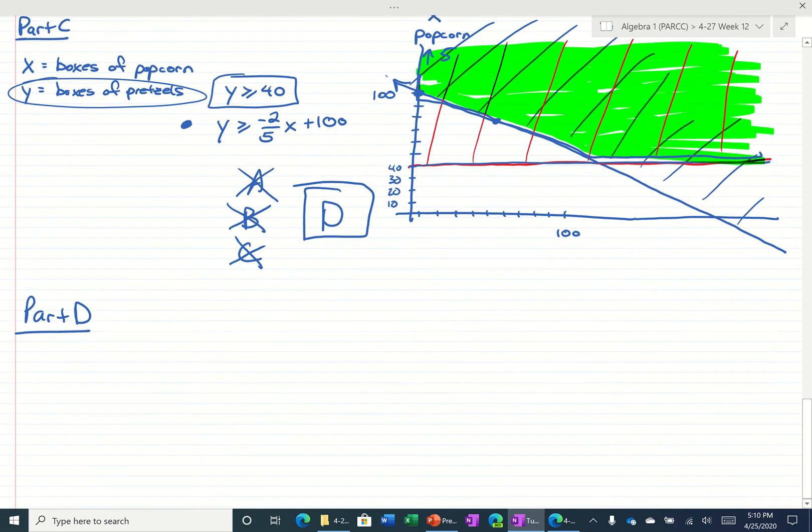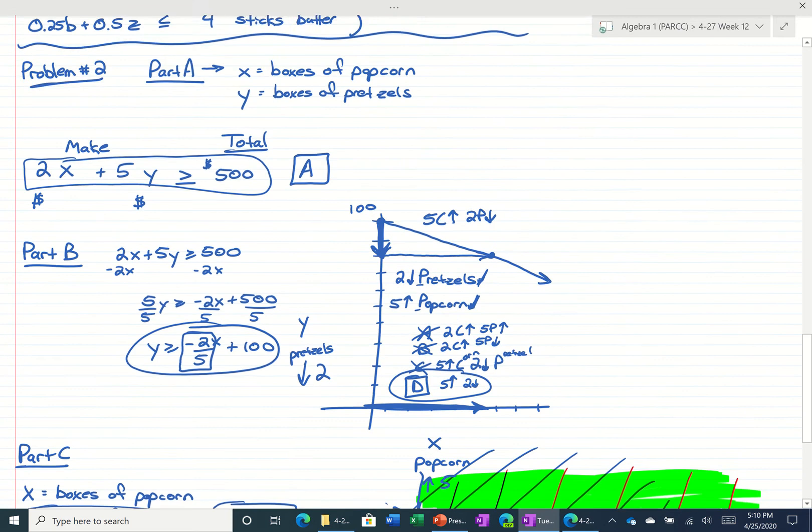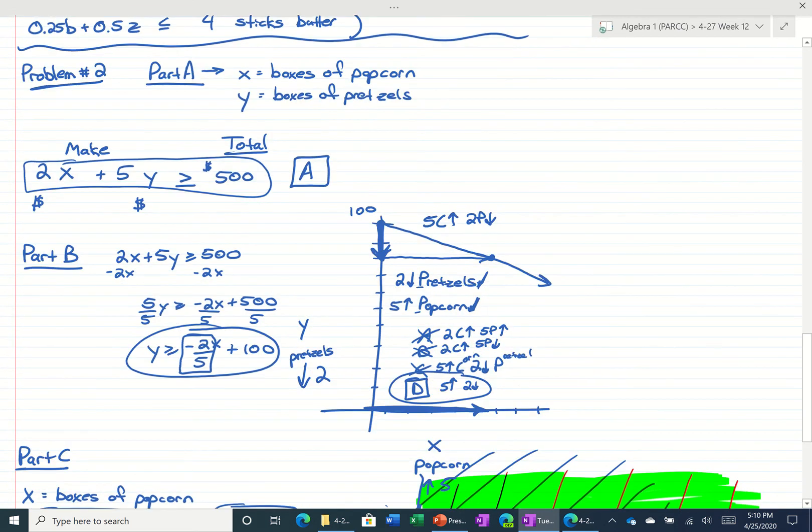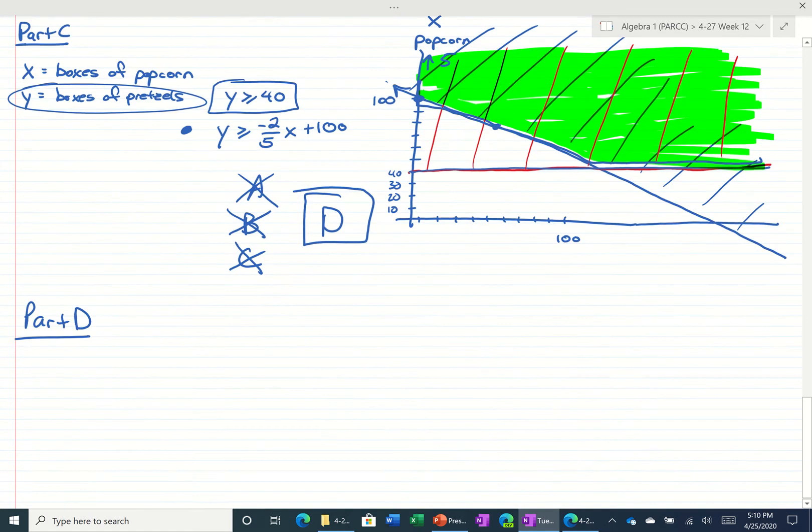So it looks like when we were talking about, we want to get $500, right? Let's go back up to what we were talking about initially. Initially, we used this inequality: 2x plus 5y is greater than or equal to $500.